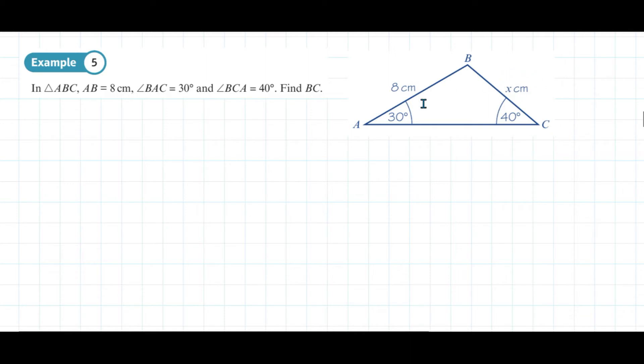So X will form a fraction with the sine of 30 degrees, and 8 will form a fraction with the sine of 40 degrees. So straight away we can write X over sine of 30 degrees equals 8 over the sine of 40 degrees.